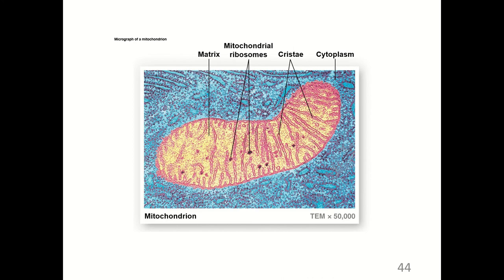The mitochondria has two membranes: an inner membrane which contains the electron transport chain and the ATP synthase enzymes that synthesize ATP molecules from ADP and inorganic phosphate.